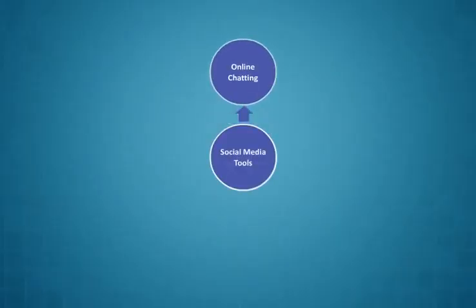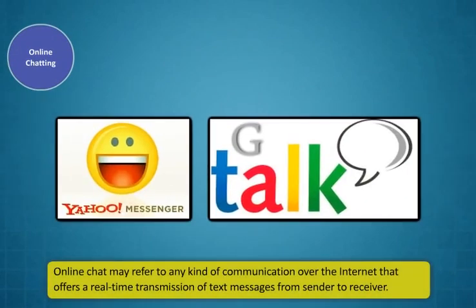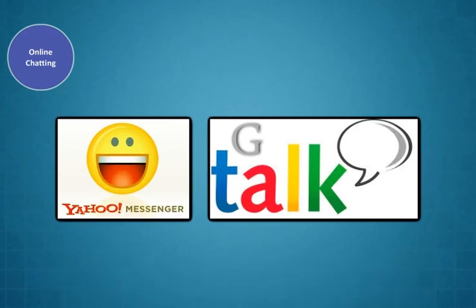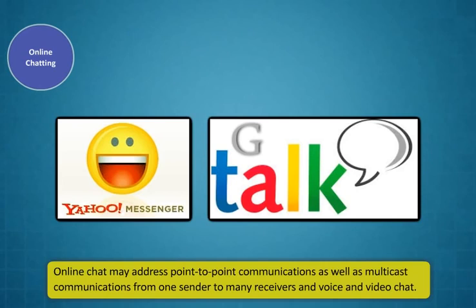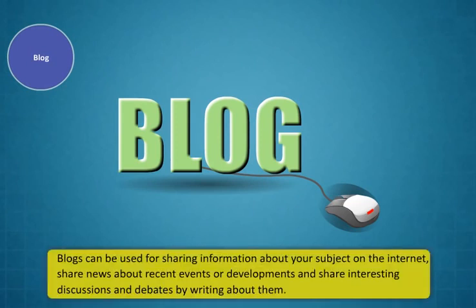There are different types of social media tools: online chatting, blogs, and social networking. Online chat refers to real-time transmission of text messages from sender to receiver, and may address point-to-point or multicast communications, as well as voice and video chat. Examples are Yahoo Messenger and GTalk. A blog is an online journal kept by an individual, group, or organization, used for sharing information, news about recent events, and interesting discussions.